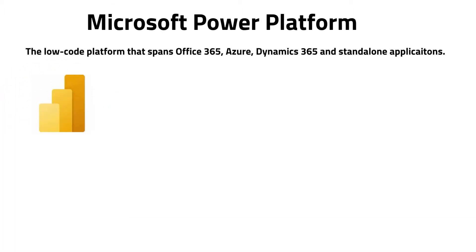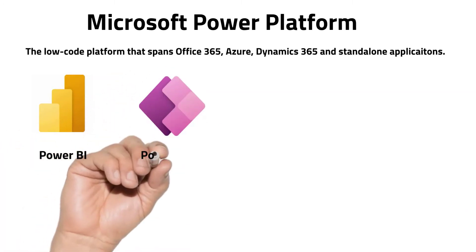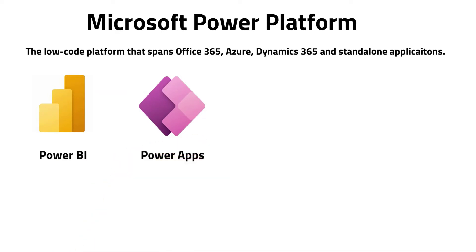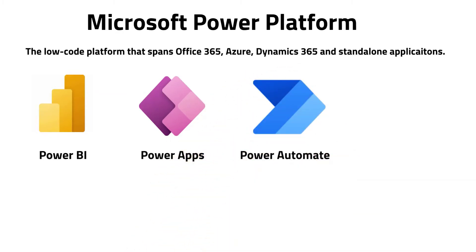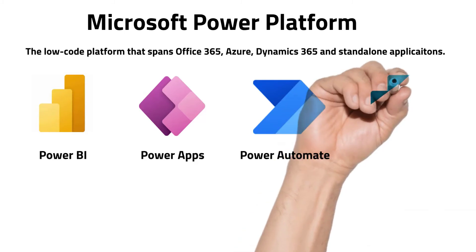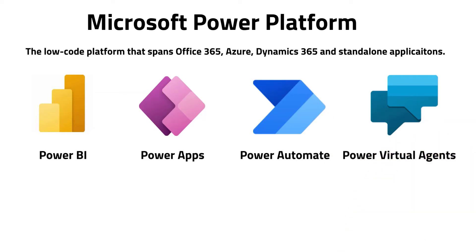We have Power BI, which makes up our reporting and analytics layer. We have Power Apps, which is the user interface layer — this is where I can design how users will interact with my data. Next is Power Automate, which is the business logic layer; you can create business process flows and workflows with simple triggers and actions. Then we have Power Virtual Agents, which I like to think of as the communication layer. This allows us to build chatbots to automate the back and forth between various parties in your organization.